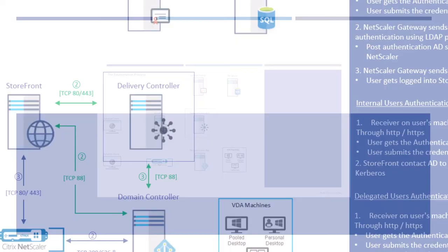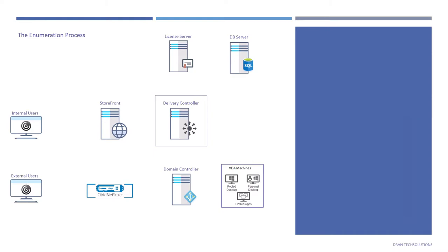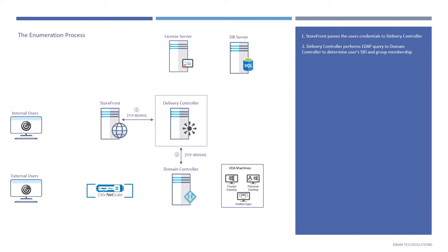Now let's move to the enumeration process. This is where users get to see all the applications and desktops they have access to. StoreFront passes the user credentials to the Delivery Controller — this applies to both internal and external users. The Delivery Controller performs an LDAP query to the domain controller to determine the user's SID and group membership.